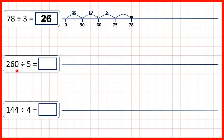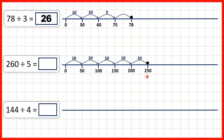Now 260 divided by 5 using the same approach. We jump 10 times 5 to get to 50, another 10 times 5 to 100, then another to 150, another to 200, and another to 250. We need 10 more to reach 260, and since 2 times 5 is 10, we make one jump of 2 times 5 to reach 260. Altogether we've jumped 10, 20, 30, 40, 50, 52. So 52 is our answer.